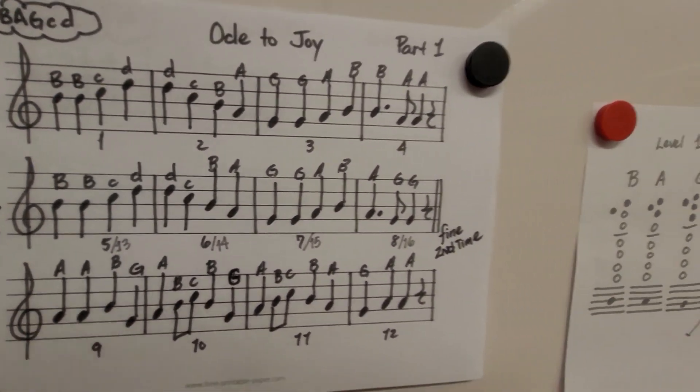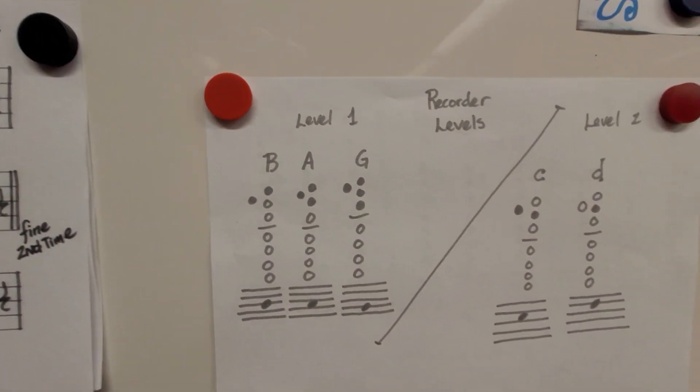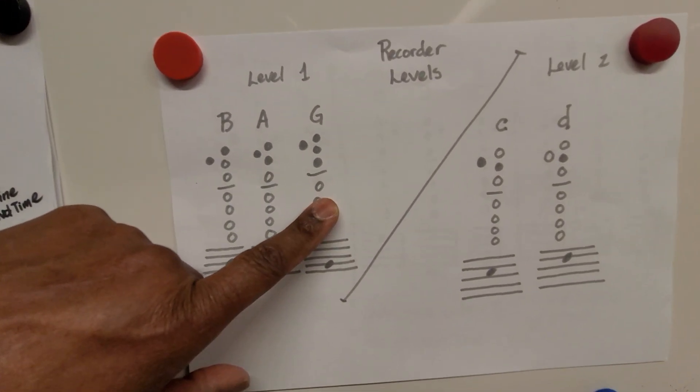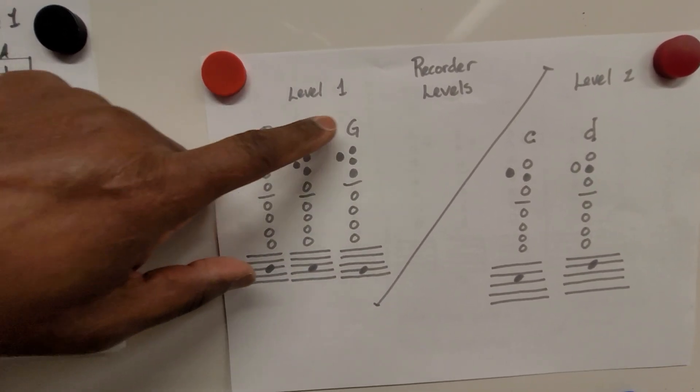All right, wait a minute, Ms. Follett. Wait a minute, Ms. Follett. I forgot. Okay, that's why I gave you this sheet as well. So we have our B, A, and G.